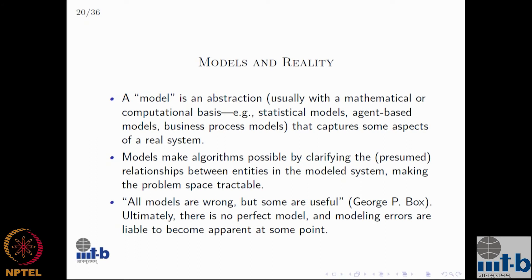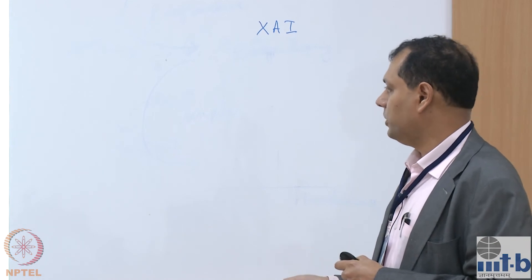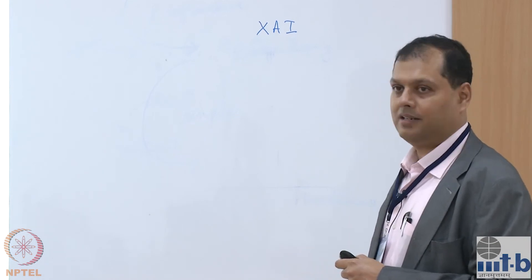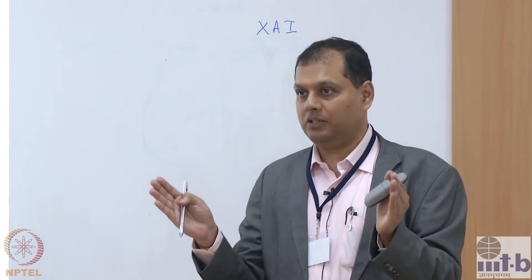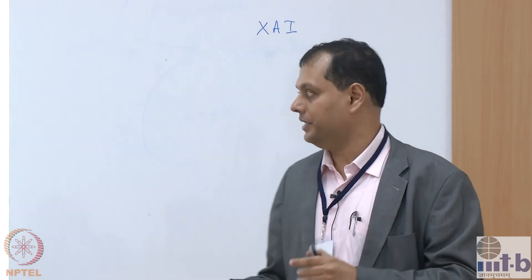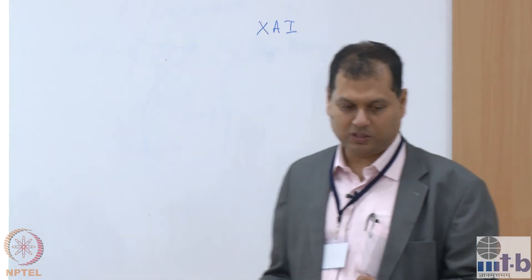George P. Box said: 'All models are wrong, but some are useful.' What he meant is all models are wrong because no model actually captures the entire system in its full glory. But some are useful because they give you some insight into how some aspects of the system will be. The problem is that in some cases, modeling errors are liable to become apparent. Even if there is nothing wrong with the algorithm itself, the modeling error will mean that at some instance you will get a problematic conclusion because the model doesn't match the reality.